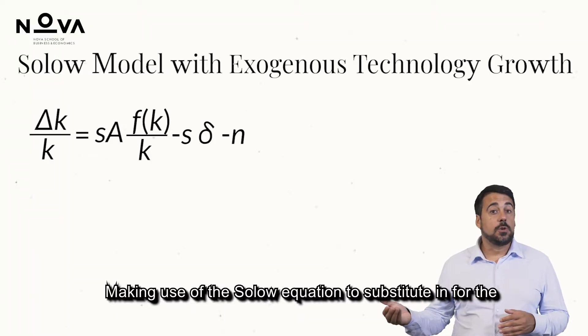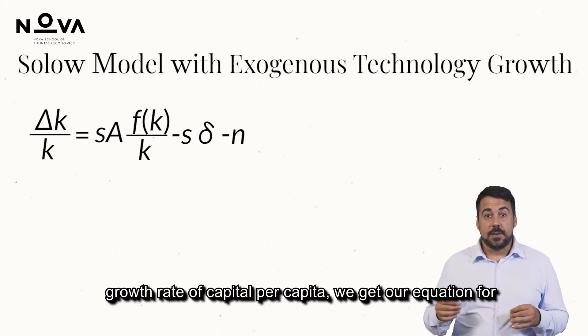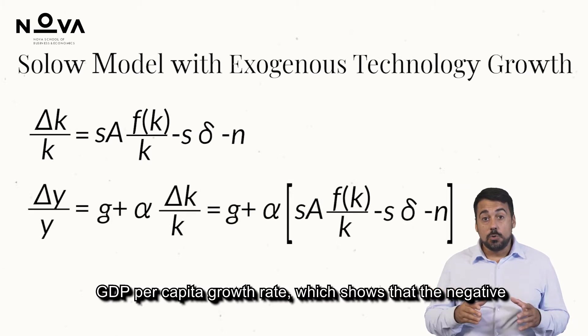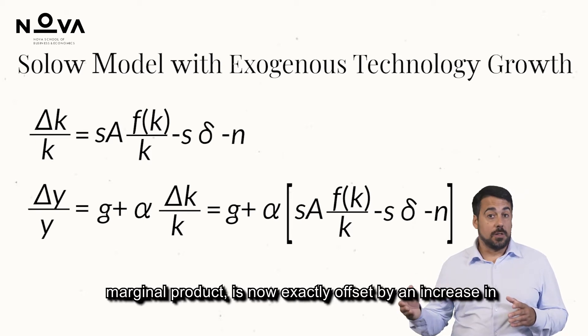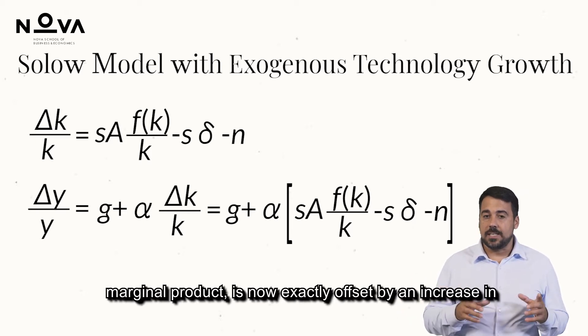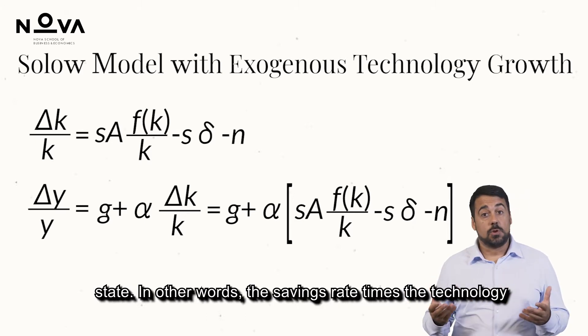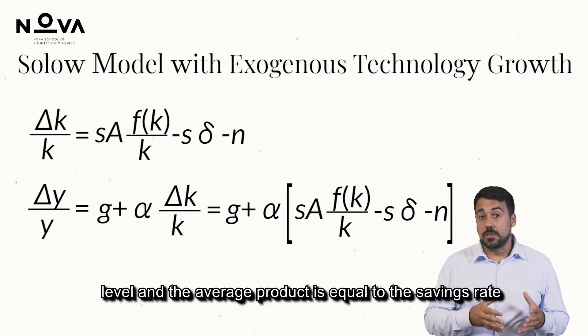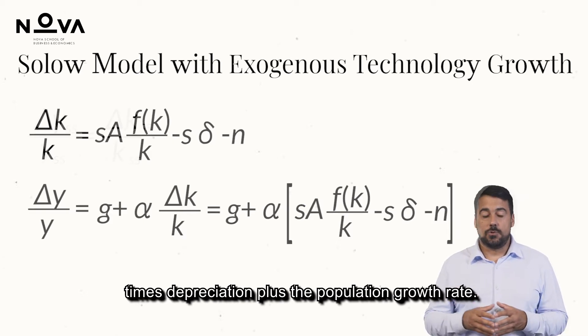Making use of the Solow equation to substitute in for the growth rate of capital per capita, we get our equation for GDP per capita growth rate, which shows that the negative effect of an increase in capital per capita in terms of marginal product is now exactly offset by an increase in technology and the average product is constant in the steady state.